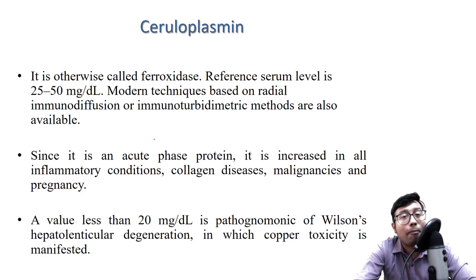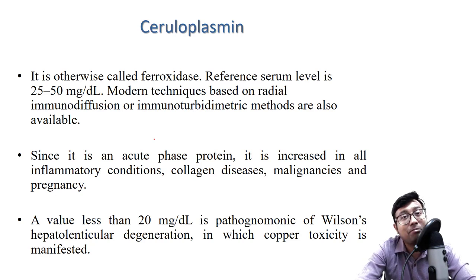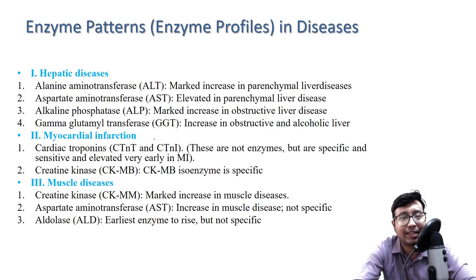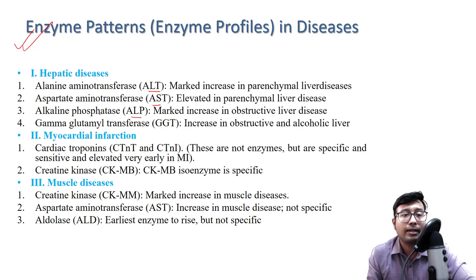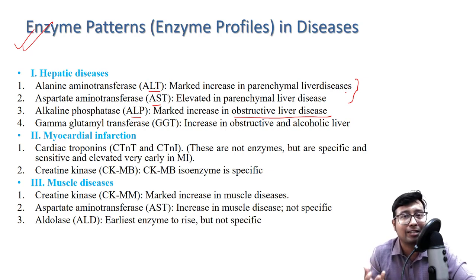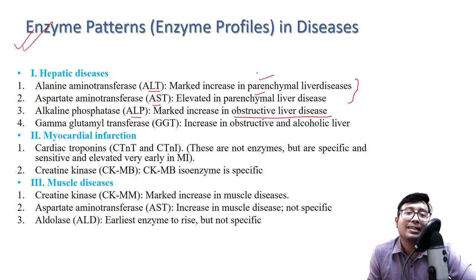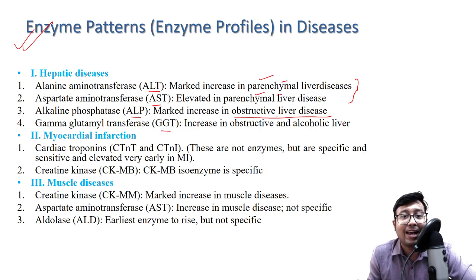Ceruloplasmin is related to copper metabolism and will be discussed in detail during mineral metabolism. This summary slide covers what we have discussed: for hepatic diseases, you need to know ALT, AST, and ALP — alkaline phosphatase is raised in obstructive liver disease, while ALT and AST are raised in parenchymal disease such as viral hepatitis (hepatitis A through G). GGT is increased specifically in alcoholic liver disorder.